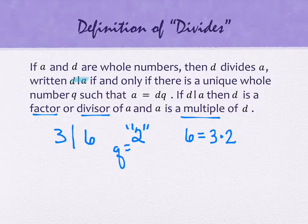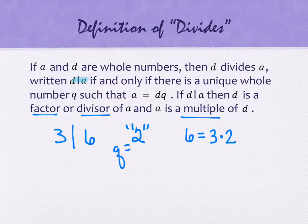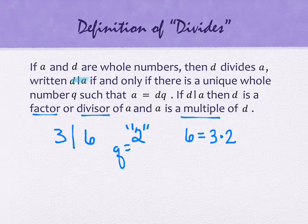That's all this definition is saying. There is some important notation here: the number that does the dividing is called a factor or a divisor — so three is a factor or divisor. And six is called a multiple of three. Think about your multiplication tables: six is in the multiplication table of the threes, so six is a multiple of three.